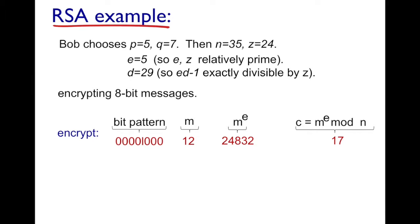To encrypt the message m = 12, we raise it to the power of e: 12^5 = 248832. We then compute the cipher text as 248832 mod 35, which gives us c = 17.